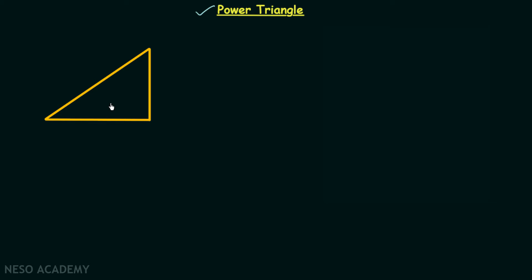And this power triangle has four items. The first one is the apparent power S and it represents the hypotenuse of the triangle and we know it is measured in volt amperes. The second one is the reactive power Q and it is representing the perpendicular of the triangle. It is measured in volt ampere reactive.